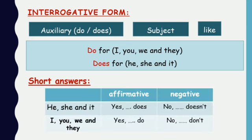Here's a table summarizing the short answers. For he, she, and it — positive: yes he does, yes she does, yes it does. Negative: no he doesn't, no she doesn't, no it doesn't. For I, you, we, and they — positive: yes I do, yes you do, yes we do, yes they do. Negative: no I don't, no you don't, no we don't, no they don't. Everything depends on the subject.